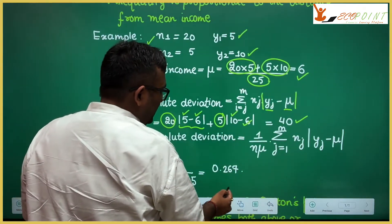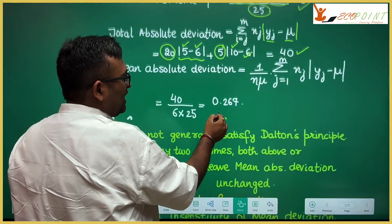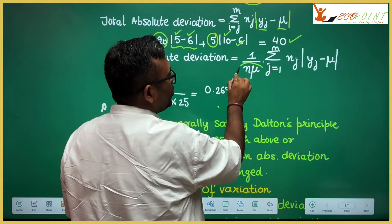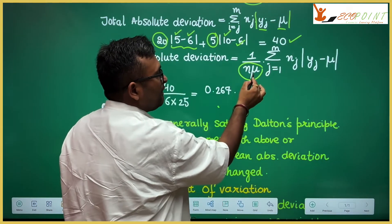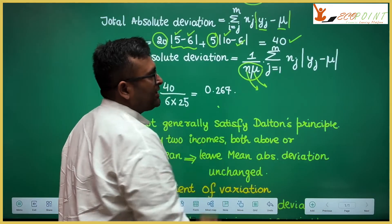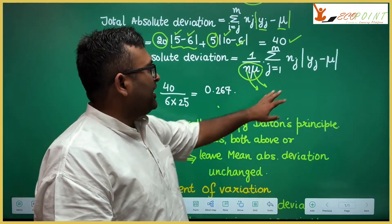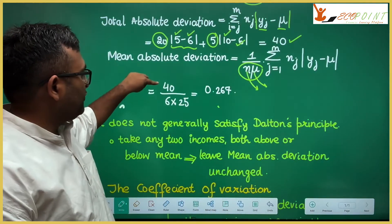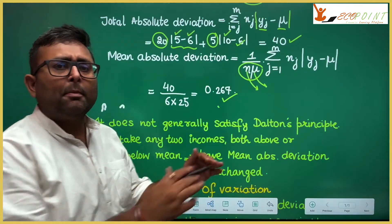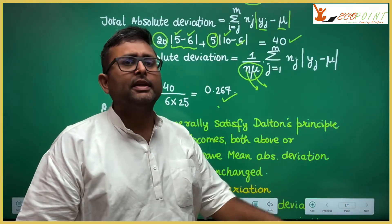To get the mean absolute deviation, we divide the total absolute deviation by the total income. Total income equals average income multiplied by number of individuals, which is 6×25 = 150. So mean absolute deviation = 40 / 150 ≈ 0.267. You can compare this to another income distribution — if the value for some other region is higher, inequality is higher there.